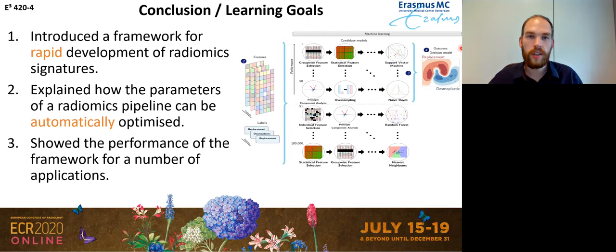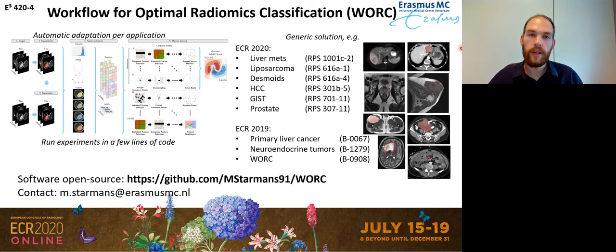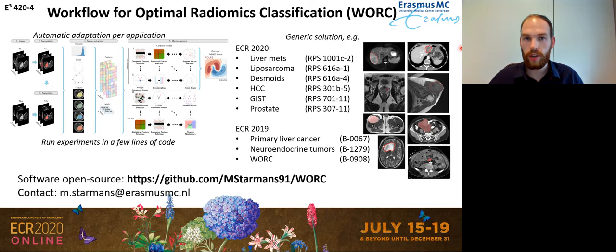That brings me to my conclusion and the final learning goals. I've introduced a framework which we can use for rapid development of radiomic signatures. We do so by automating the process of finding a good solution within a huge landscape of different methods and parameters, and I've shown that it works on a variety of different applications. What's good to note is that this platform is open source — so it's free to use — and it's also very easy to use because it automates the whole process; you only need a couple of lines of code. I hope I've convinced you that it works in a wide variety of applications. If you're interested, please go to the site mentioned below or contact me and just try it out yourself.